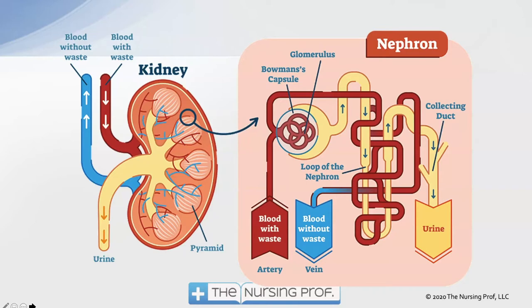On the left side you see the kidney with blood coming in. Blood with waste enters the kidney to be filtered, urine is produced and exits via the ureter, and blood without waste returns to the body. Zooming in to the nephron — the functional unit of the kidney — blood with waste enters from the artery into Bowman's capsule and the glomerulus, where all filtration takes place, removing waste products and cleaning the blood.